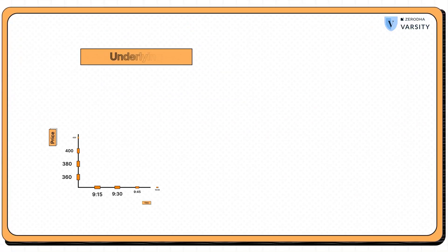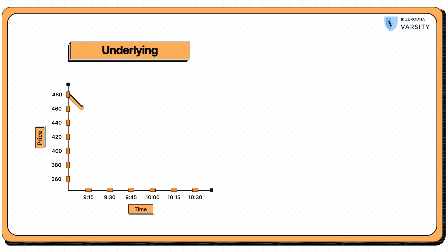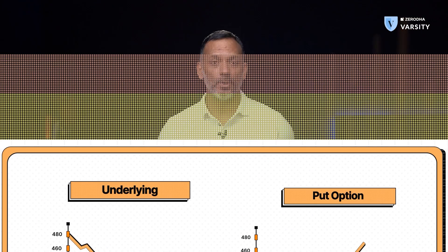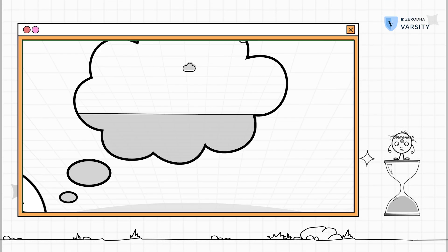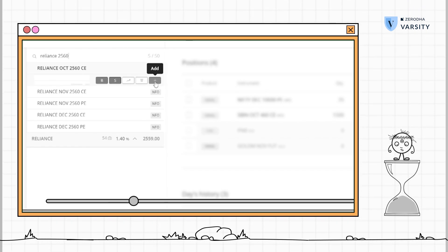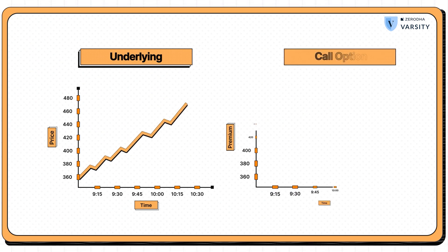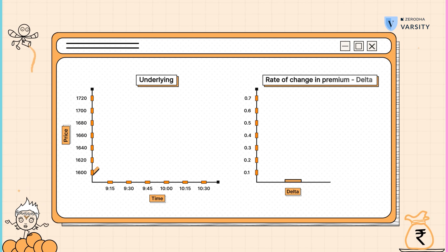From this observation, we can conclude that as and when the underlying price changes, so would the option premiums. To be precise, as and when the underlying price increases, the call option premium increases. Likewise, as and when the underlying price decreases, the put option premium increases. Now, the bigger question is: how do I measure or estimate what is the likely change in premium for a given change in the underlying? This is where the delta of an option comes to our rescue. The delta of an option helps us understand what is the likely change in premium for every one point change in the underlying.